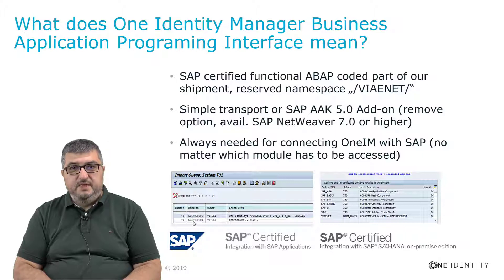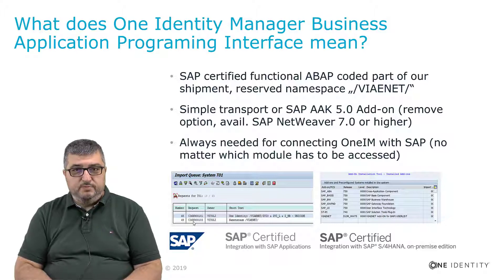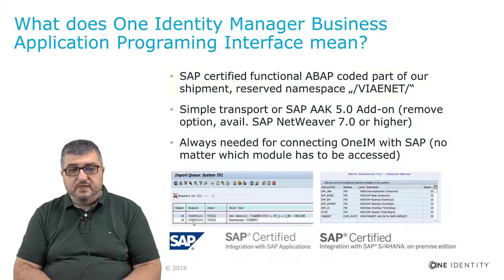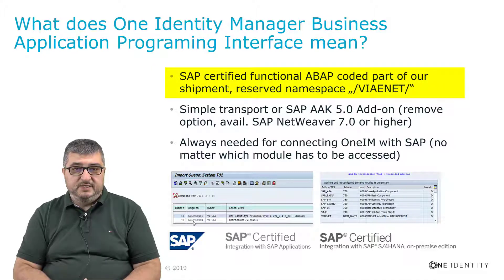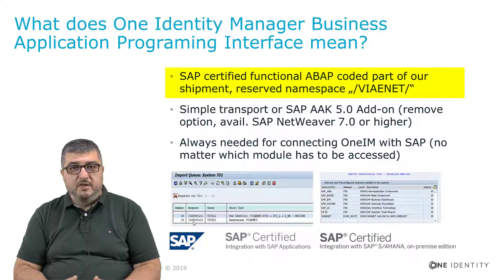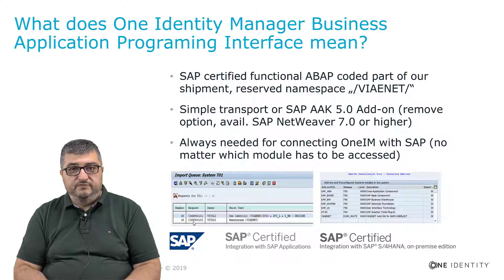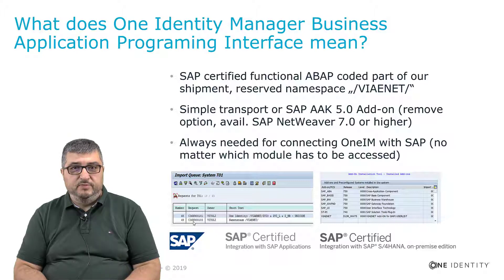When connecting an SAP client to One Identity Manager, we also require some transports to be imported into the specific client. These transports are ABAP code that is part of our shipment and will create a reserved namespace, add additional tables into the system, as well as additional ABAP program functions and code that the connector relies on. This allows us to maintain a consistent interface across different versions of SAP, with the specifics of the underlying SAP version hidden behind our transports.